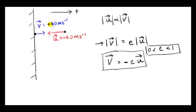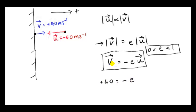In our example, the initial speed is 60 and the final speed is 40. Taking rightward as positive, vector u is negative: minus 60. So vector v equals +40, which must equal minus e times minus 60. So e comes out to be positive: e is 40 over 60, which is two-thirds, as we saw before. e has no units — it's dimensionless, just a ratio of speeds, and the meters-per-second units cancel out.